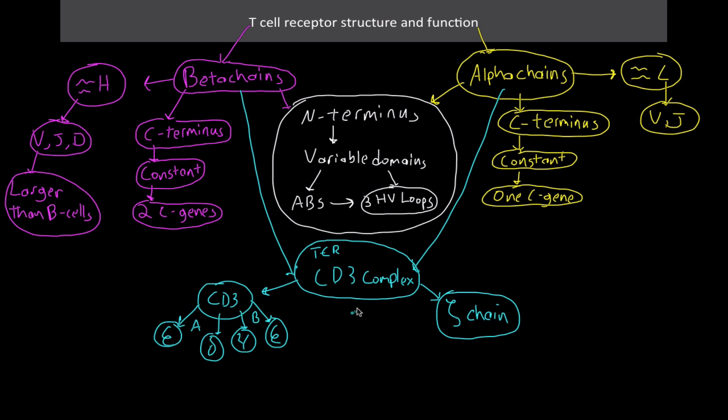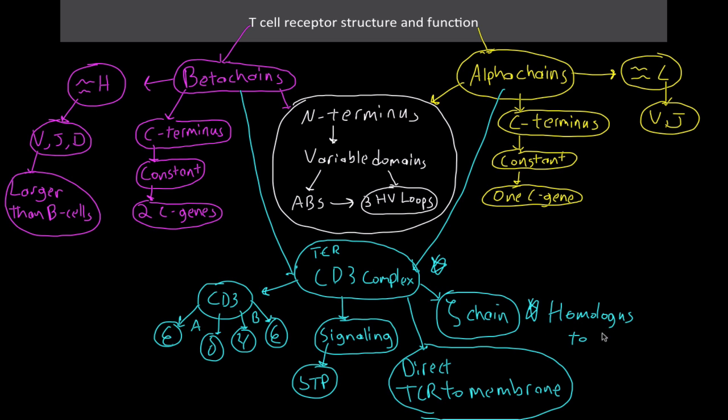Both of these things come into play here - they both play a role in signaling and transport. For signaling, we're talking about the signal transduction pathway. For the transport part, there's directing the T cell receptors to the membrane where they'll be embedded as functional things. These are homologous to Ig alpha and Ig beta - remember those guys from the B cells? That's where the homology comes from.